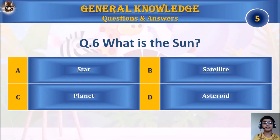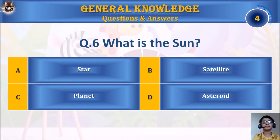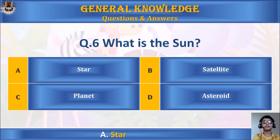Question 6: What is the Sun? A. Star, B. Satellite, C. Planet, or D. Asteroid. Your time starts. The answer is A. Star.